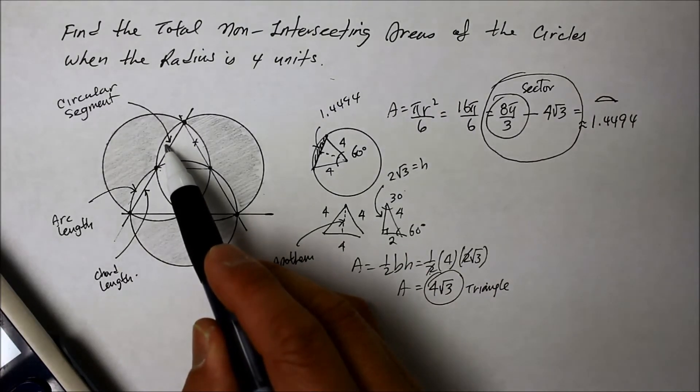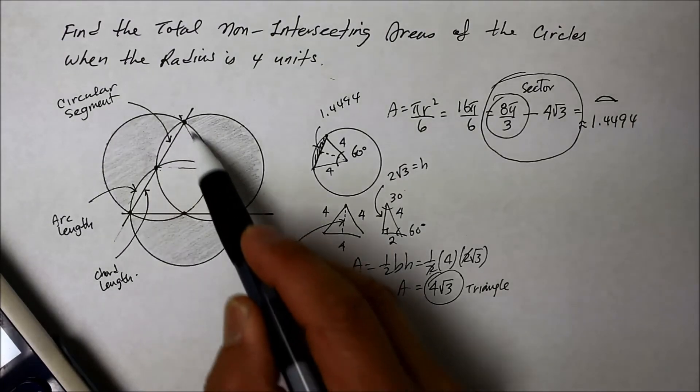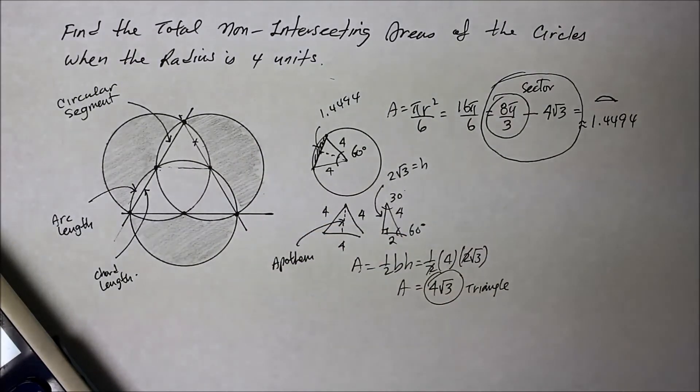But how many do we have? We have 1, 2. For each circle, we need to take away from that semi-circle. Okay? So now what do we do?